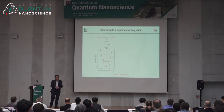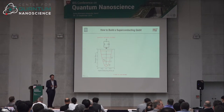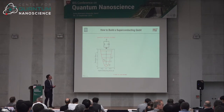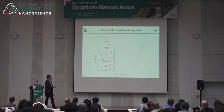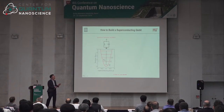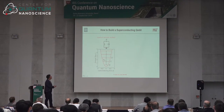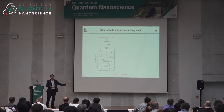Let me now describe superconducting qubits. A superconducting qubit can be thought of as a quantum harmonic oscillator with an inductor and a capacitor in parallel. We make it out of superconducting materials, so it's very low loss. When we cool it to temperatures where the thermal energy kT is much less than the frequency separation, we have quantized energy levels.